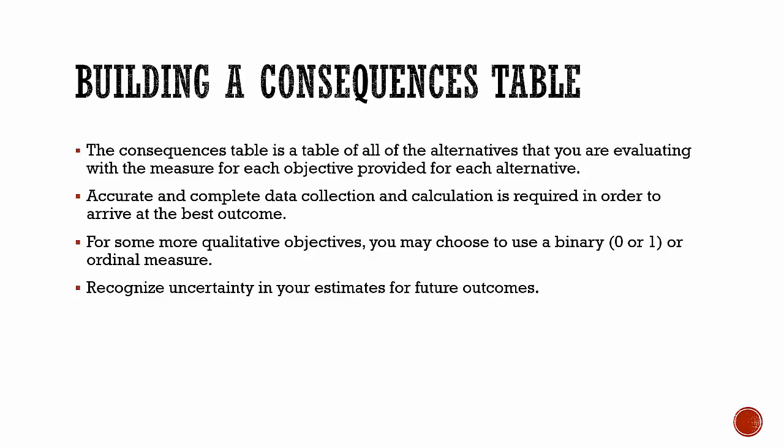The Likert scale is a very common scale used as an ordinal measure, so you rank things one, two, three, four, five, and so on. Finally, recognize uncertainty in your estimates for future outcomes.